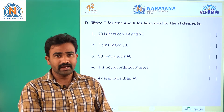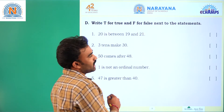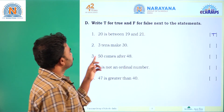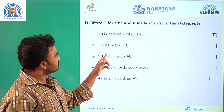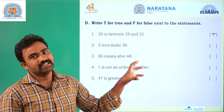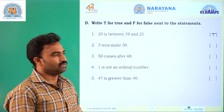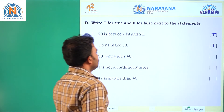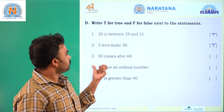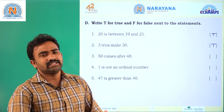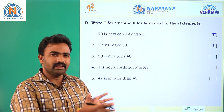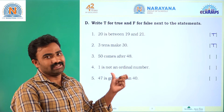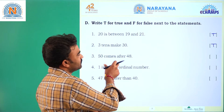Next one: three tens make 30. Yes, three tens is equal to 30, so this is also true. Next: 50 comes after 48. The after number of 48 is 49, but here 50 is given, so it is not correct. Write false.